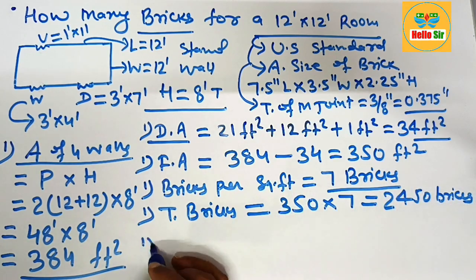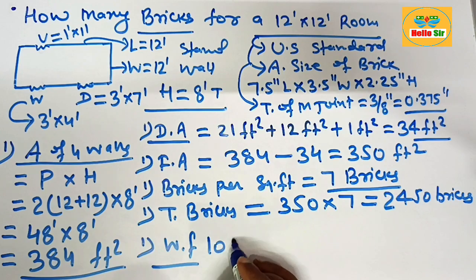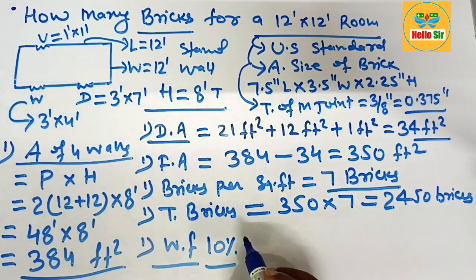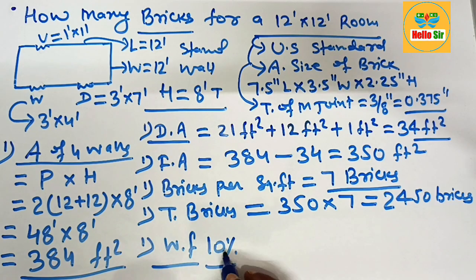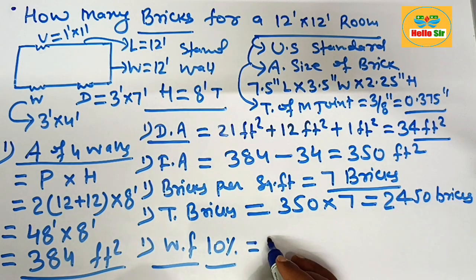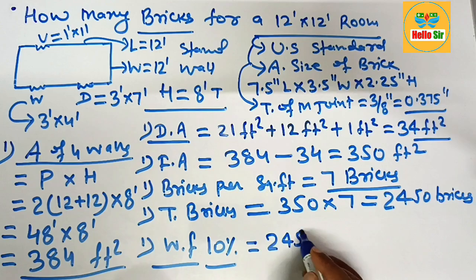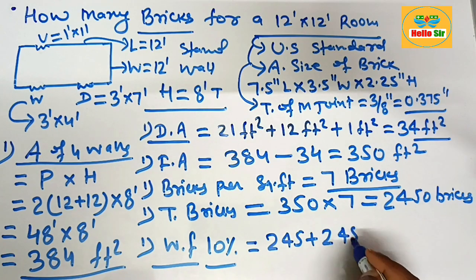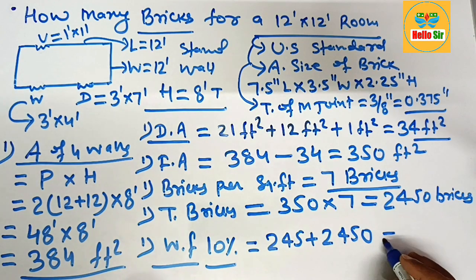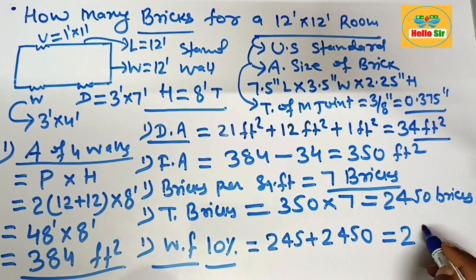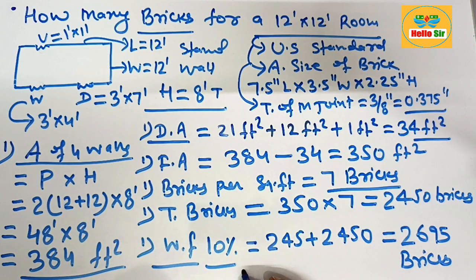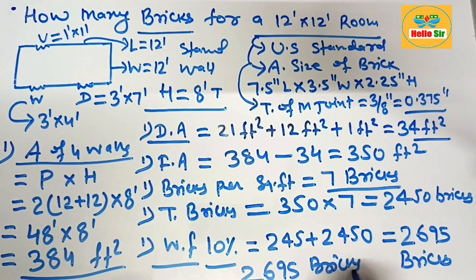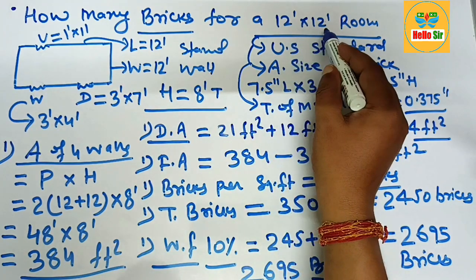Add a waste factor of about 10 percent, since some bricks are damaged during transportation, installation, and storage. Ten percent of 2450 is about 245. After adding this, the total comes to about 2695 bricks. This means you need a minimum of about 2695 bricks to build a 12 foot by 12 foot room.